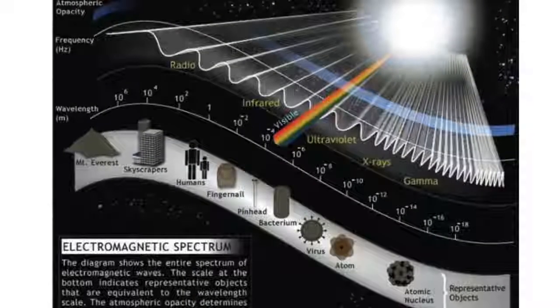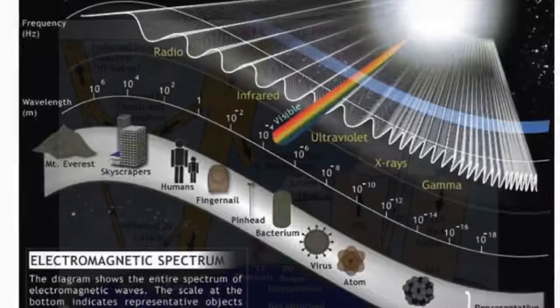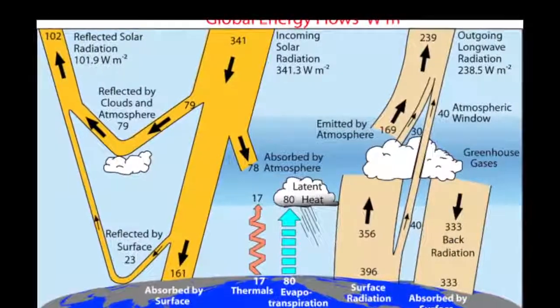These wavelengths enter the Earth's system, but then what happens? Let's look at this diagram from NCAR Distinguished Senior Scientist Kevin Trenberth and colleagues to find out.